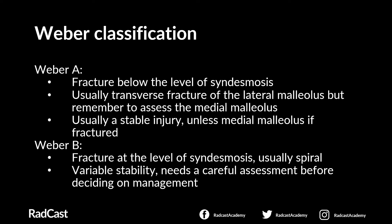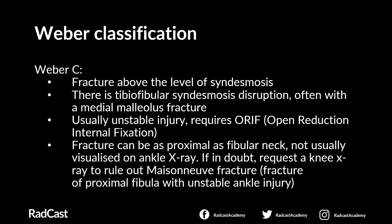The Weber classification itself can give us a clue about ankle joint stability. Weber A fractures are fractures below the level of syndesmosis. Usually they are a transverse fracture of the lateral malleolus and are stable injuries. In rare occasions, the medial malleolus is also fractured and those are unstable injuries. When it comes to Weber B fractures, those are fractures at the level of the tibiofibular syndesmosis. They have a variable stability depending on the underlying bone and soft tissue injury. Therefore, it's advisable to seek a senior opinion about these before deciding on further management.